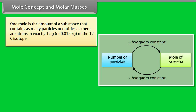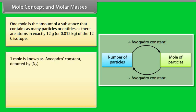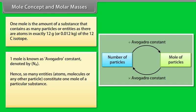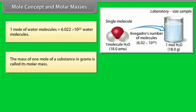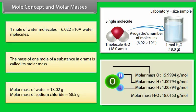One mole is the amount of a substance that contains as many particles or entities as there are atoms in exactly 12 grams (0.012 kg) of the carbon-12 isotope. This is known as Avogadro's constant (Nₐ). Therefore, 1 mole of H atoms = 6.022 × 10²³ atoms, and 1 mole of water molecules = 6.022 × 10²³ water molecules. The mass of 1 mole of a substance in grams is called its molar mass. Molar mass of water = 18.02 g; molar mass of sodium chloride = 58.5 g.